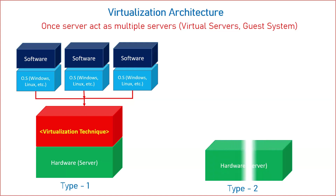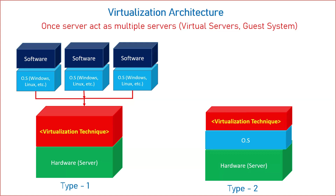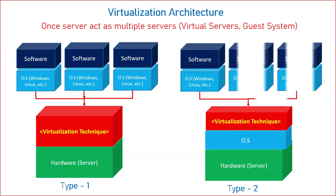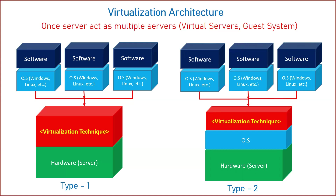There is another option called type two. In type two, we have simple hardware; on top of the hardware we install an operating system — Linux, Windows, or whatever. If I compare it with type one: in type one, I was installing the virtualization technique directly on top of the hardware. In type two, on top of my hardware I install the operating system, and then on top of the operating system I install the virtualization technique, and then I divide my physical hardware into multiple machines.